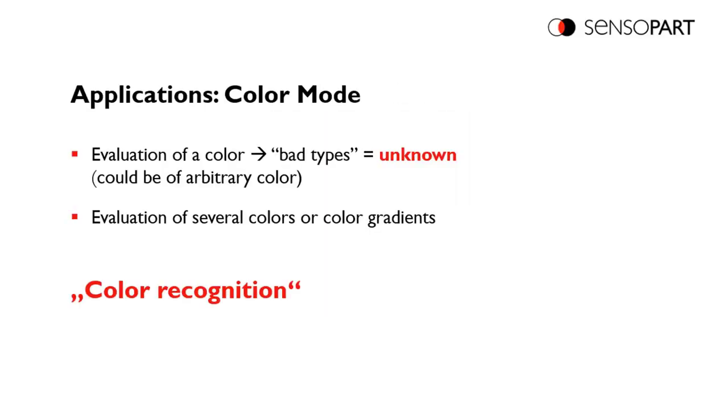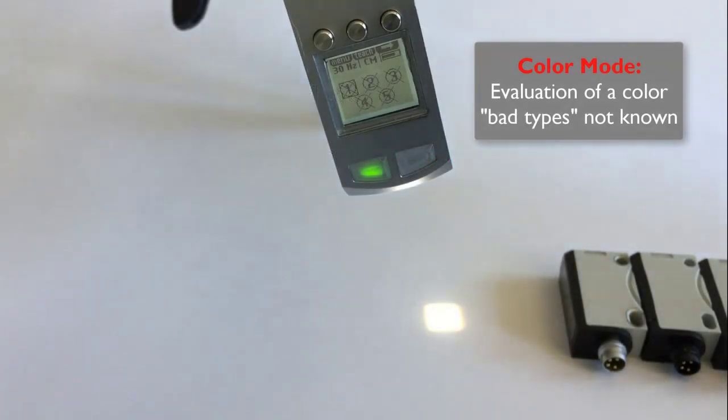Color mode is the traditional way color sensors have been taught. You put the target color below the sensor to teach it and you set a tolerance. When you have to verify that your production parts are all the same color or you have a tolerance specification, that's when you use color mode.